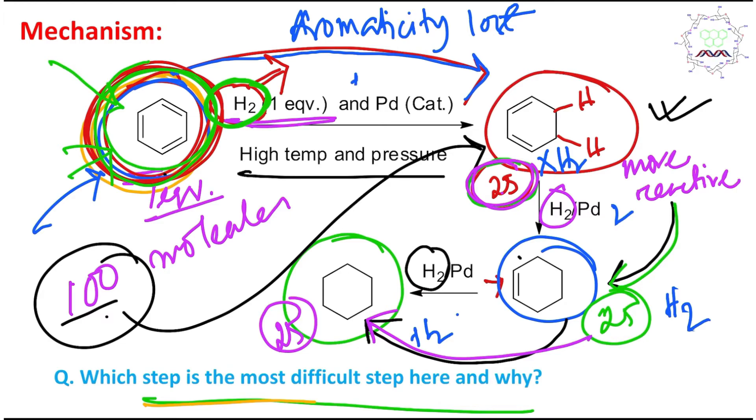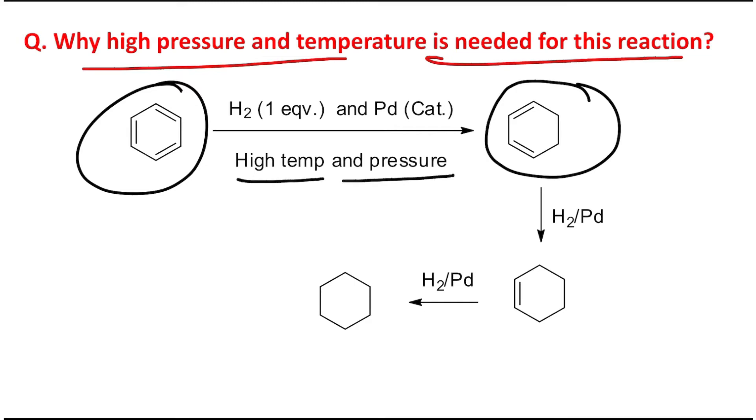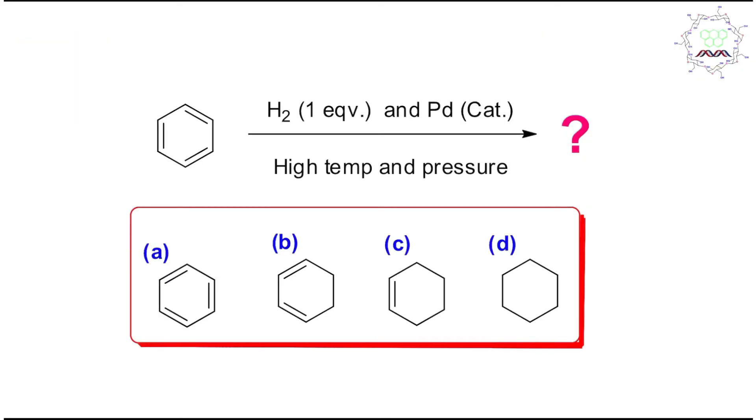It's a very conceptual question, students. Second thing: why high pressure and high temperature needed for this reaction? Since in the first step aromaticity is lost and aromaticity has very high stabilization energy, that's why high temperature and high pressure are essential to overcome that activation energy, which is higher in this case.